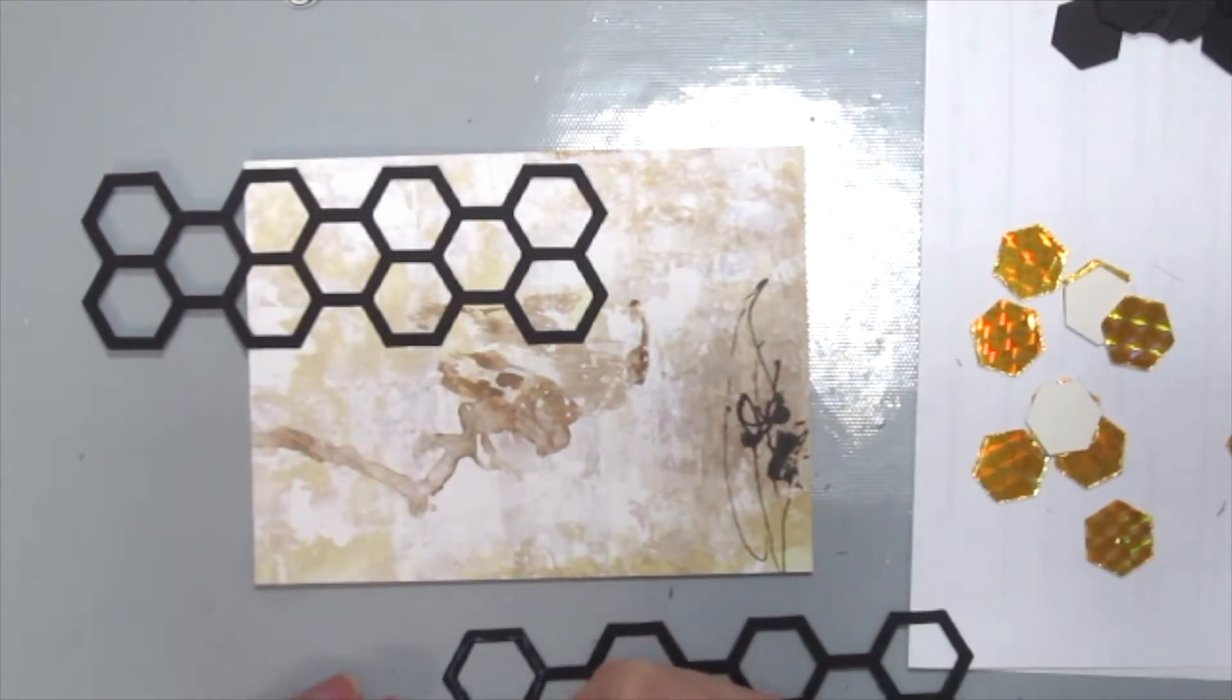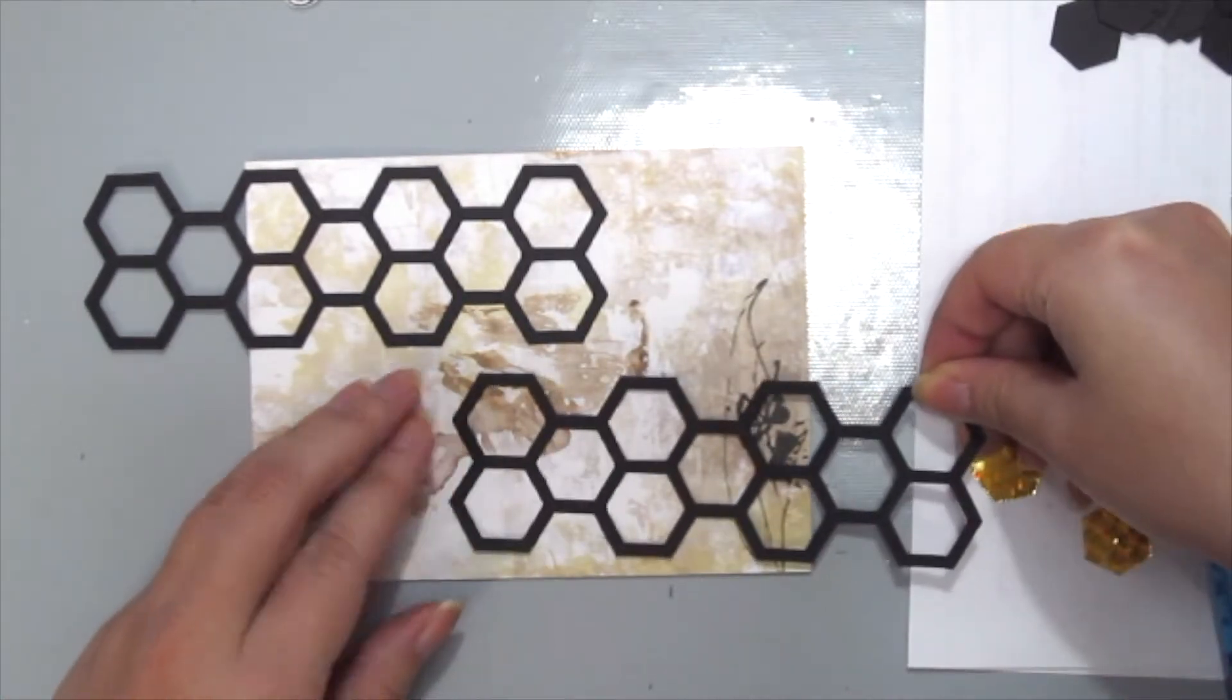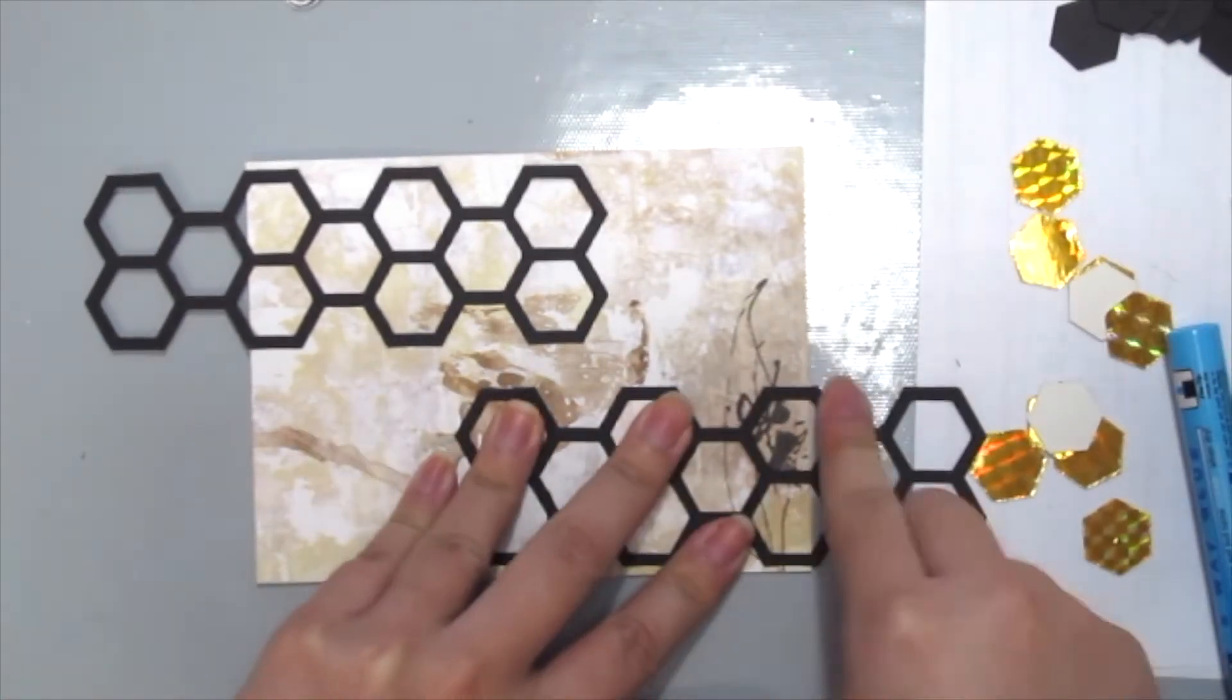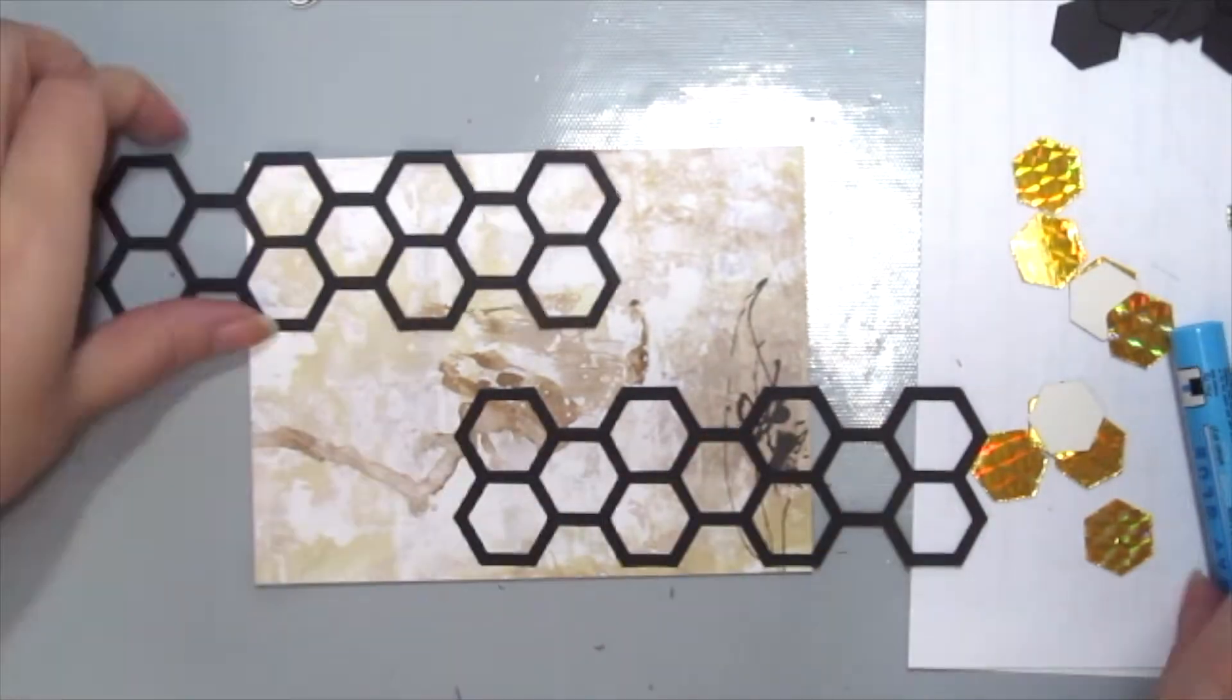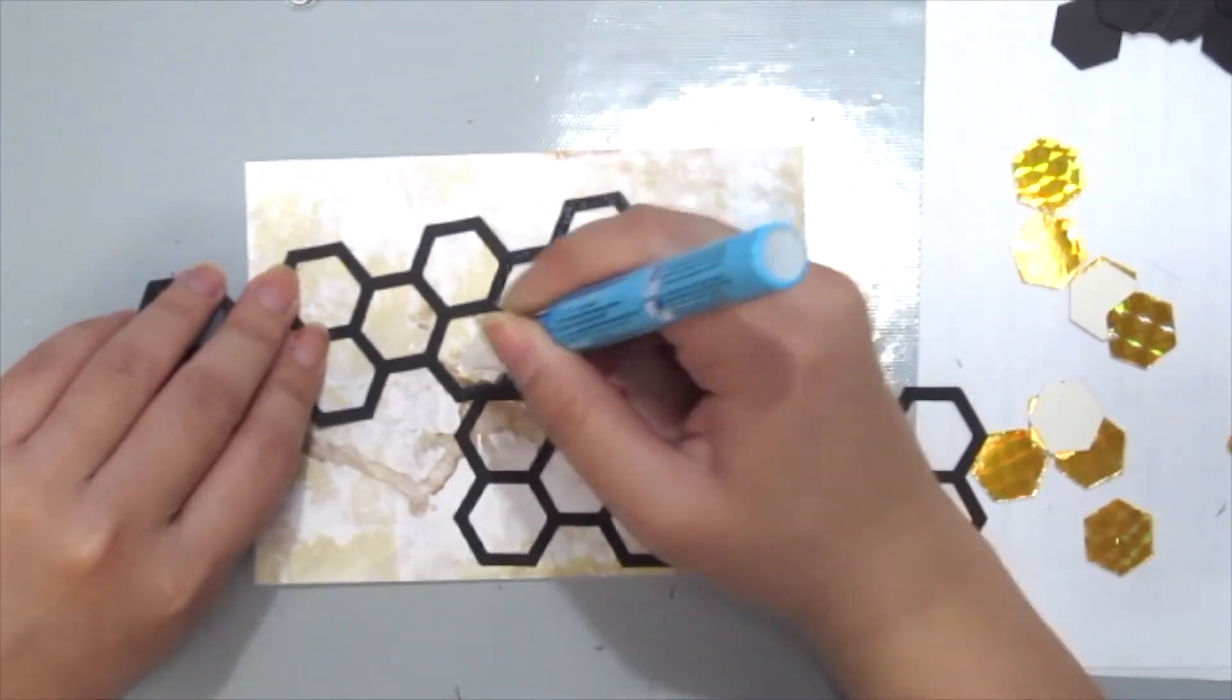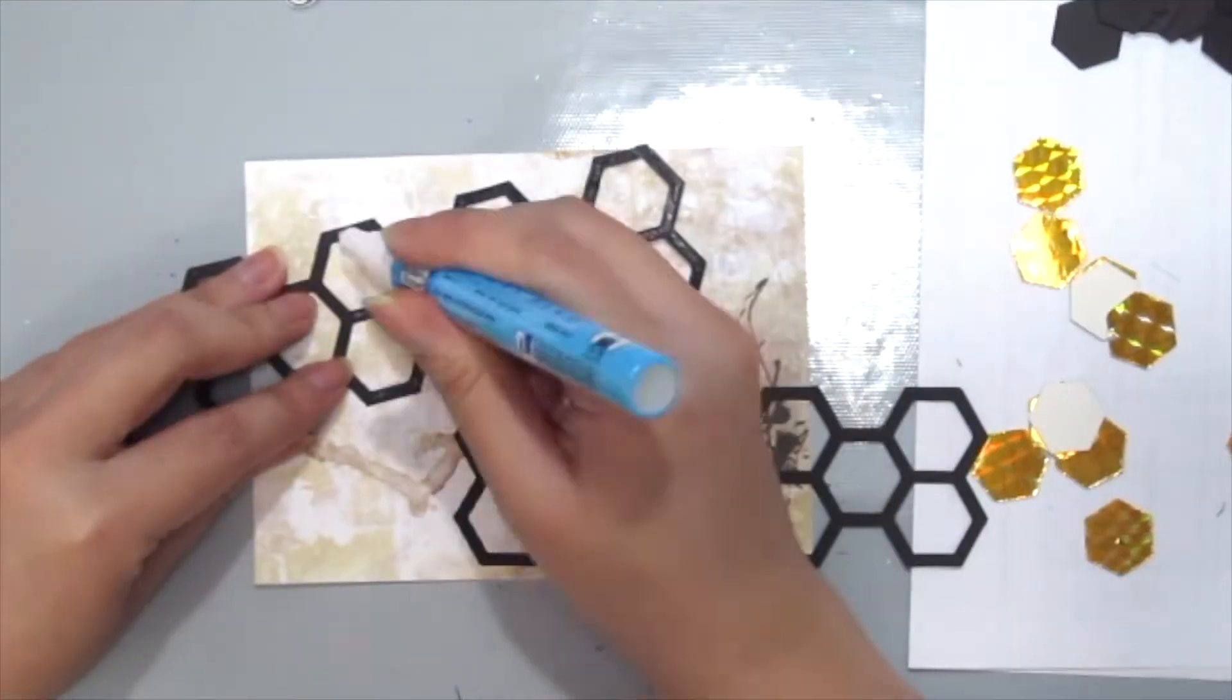Wait a minute! I know what you're asking. You're saying I don't have this die. How am I going to create this card? Well, you could always cut out the hexagon shapes using a template or just freehand, and without even the framework it kind of looks cool.